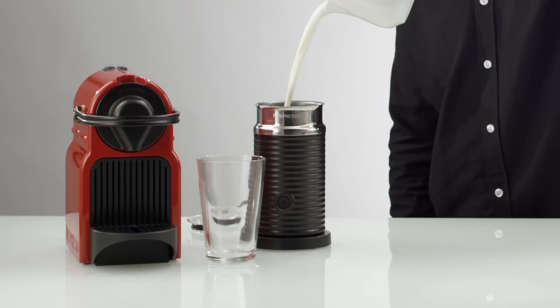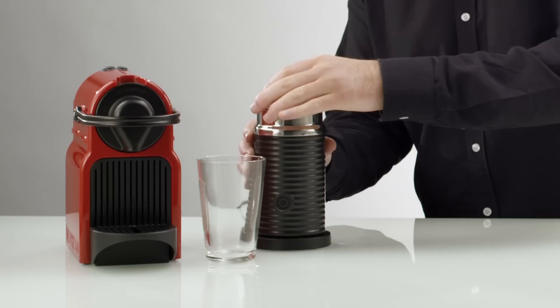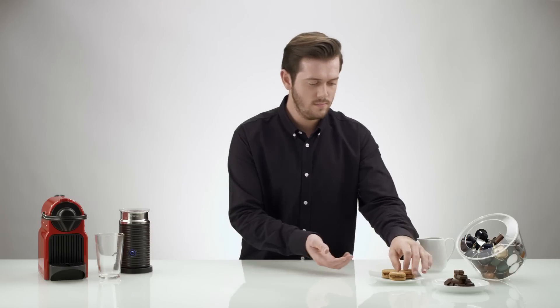You start by pouring the milk in the Aeroccino. Turn it onto the cold mode and wait until you get a nice foam.